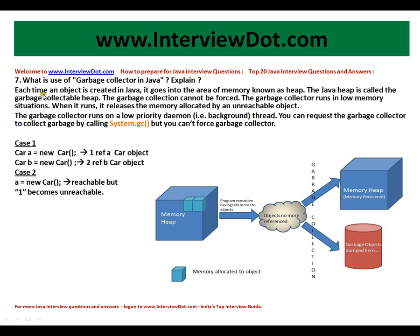So what is a garbage collector? Each time an object is created in Java, it goes into an area of memory known as the heap. As you can see in this picture, there is a memory known as heap memory — whenever you create an object, it is allocated here. The Java heap is called the garbage collectible heap. The garbage collection cannot be forced.